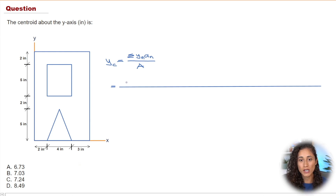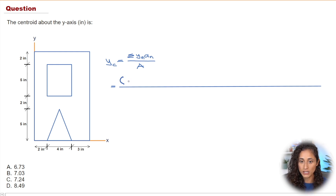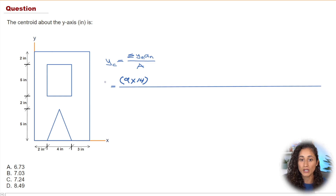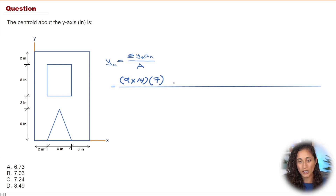Let's apply this equation. First, we'll look at the big rectangle. The area of the rectangle is b times h, where b is 9 and h is 14, so that's 9 times 14. We multiply by y-n, which is the centroid of the rectangle — that's half of h, so 14 over 2, which equals 7.